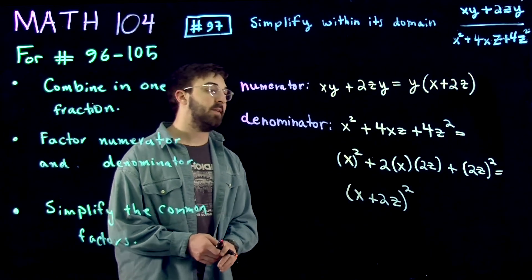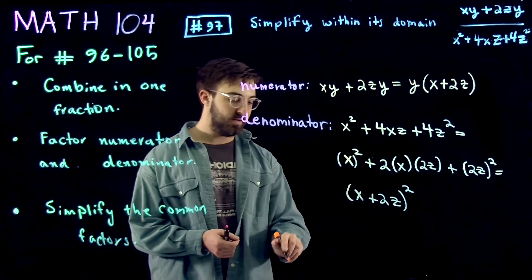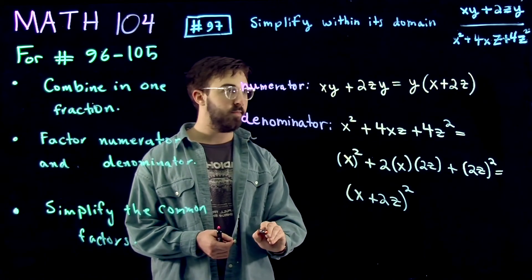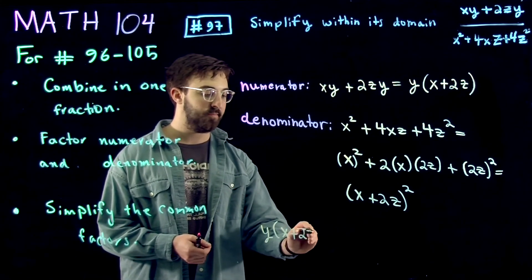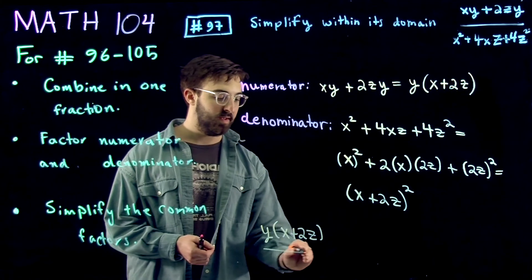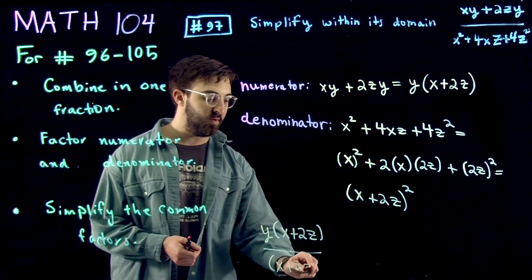So now on the last step, we just rewrite the expression in its factored form. We have in the numerator, y times x plus 2z. And in the denominator, we have x plus 2z quantity squared.